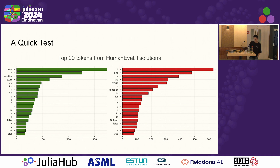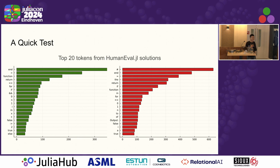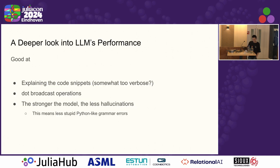A quick test: I plotted the top 20 tokens from HumanEval.jl solutions. One is from myself and another is from GPT-4O. Can anyone tell which one is from me and which one is from GPT-4O? An audience member guessed correctly — they could tell by the verbosity of the comments.